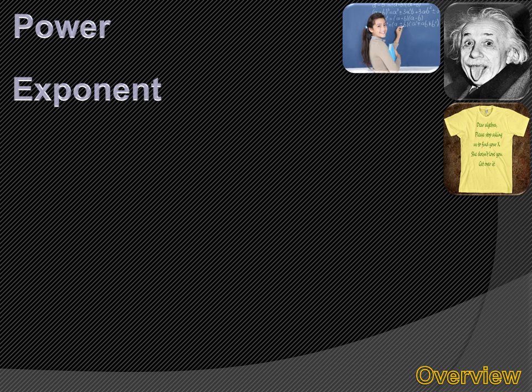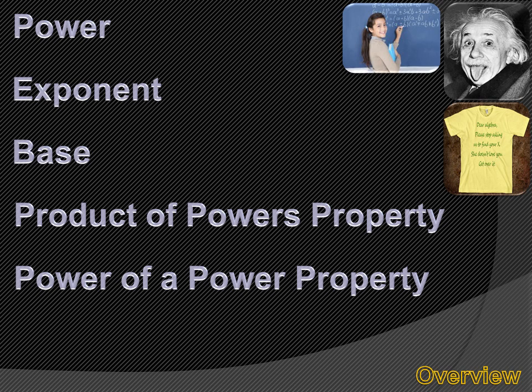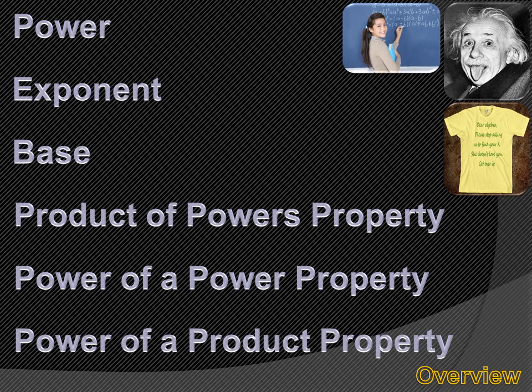Today we're going to be talking about exponential properties involving products. That's just a fancy way of saying we're going to deal with powers — squared numbers and cubed numbers — and the properties that control operations of these when you're doing multiplication. Before this lesson's over, you should understand what a power is, what an exponent is, what the base is, how the product of powers property works, how the power of a power property works, and how the power of a product property works.